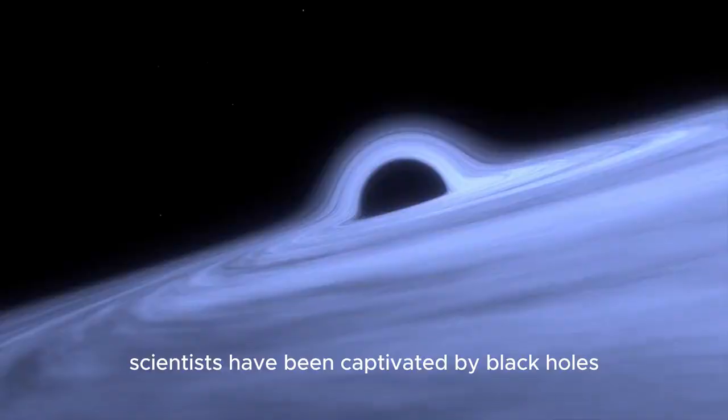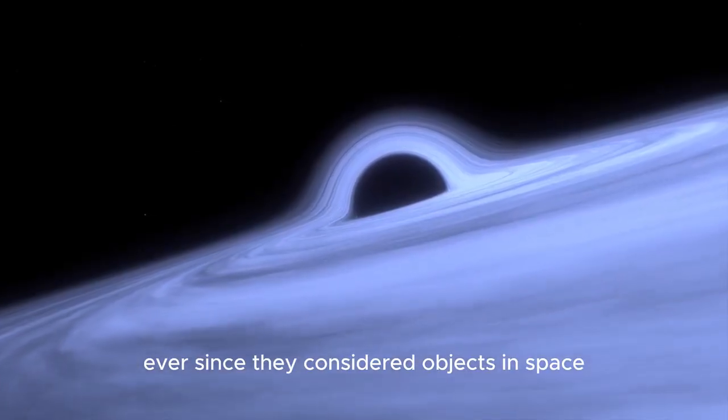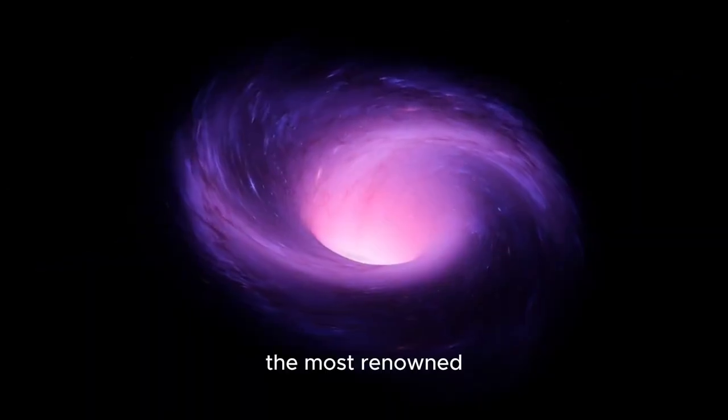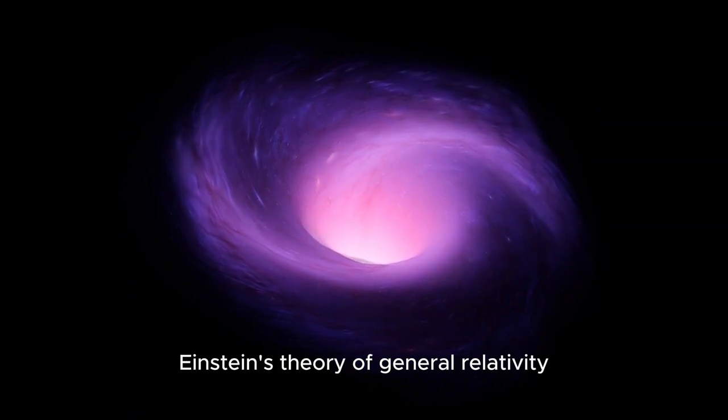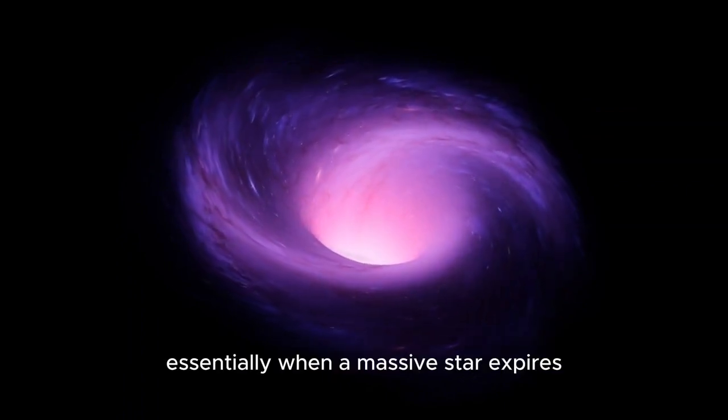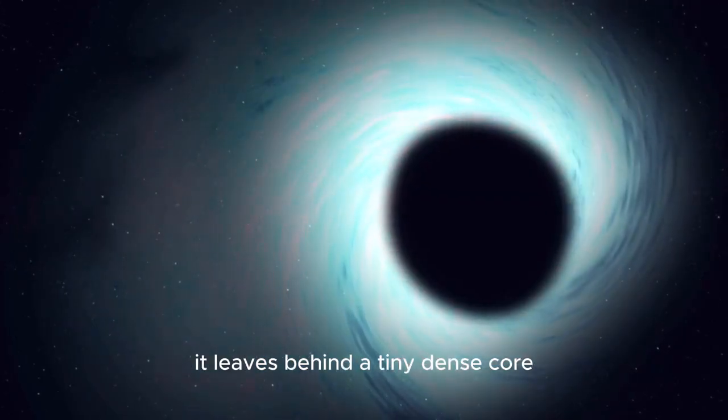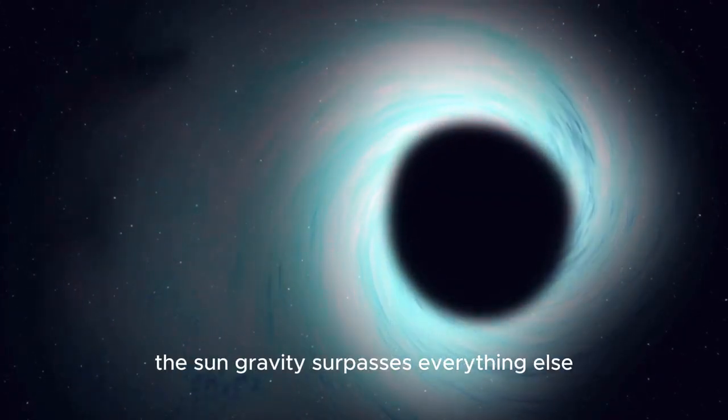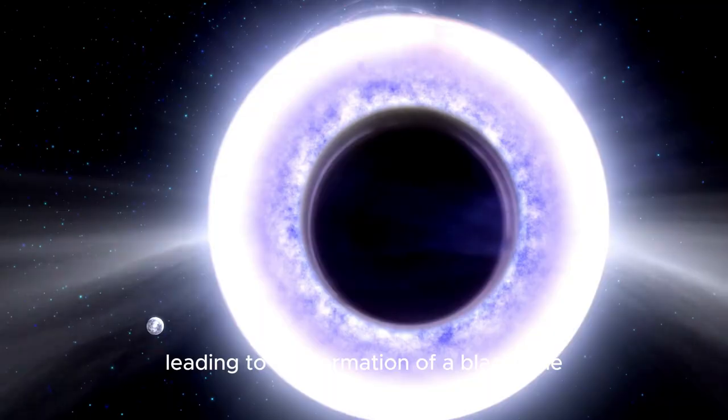Scientists have been captivated by black holes for centuries, ever since they considered objects in space so immense and dense that they could ensnare light. The most renowned theories regarding black holes were predicted by Einstein's theory of general relativity. Essentially, when a massive star expires, it leaves behind a tiny, dense core. If this core's mass is more than three times that of the sun, gravity surpasses everything else, leading to the formation of a black hole.